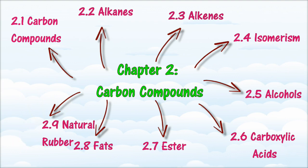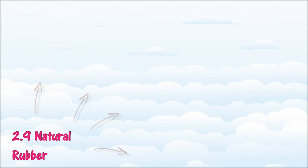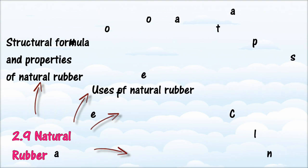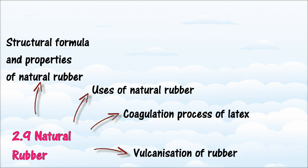In Section 2.9, we will learn about Natural Rubber. At the end of this section, you should be able to: draw the structural formula of natural rubber; state the properties of natural rubber; state the uses of natural rubber; describe the coagulation process of latex and describe the method used to prevent latex from coagulating; describe the vulcanization of rubber; describe how the presence of sulfur atoms changes the properties of vulcanized rubber; and compare and contrast the properties of vulcanized and un-vulcanized natural rubber.